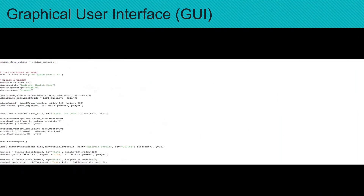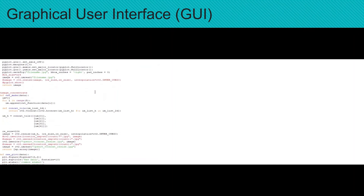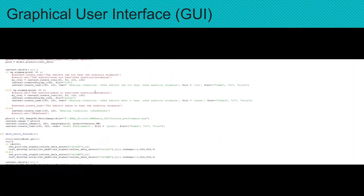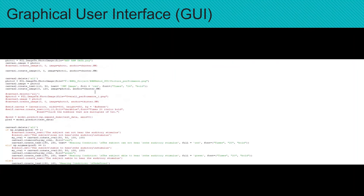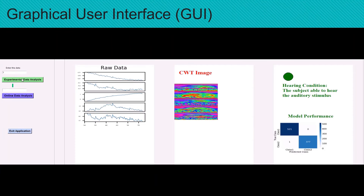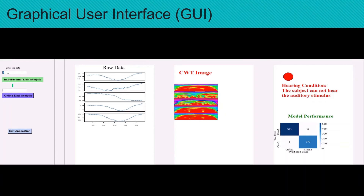In this study, we have also designed a graphical user interface. To demonstrate the model performance, we shuffle the testing dataset such that if we input an odd number, it calls the labeled data when the subject is able to hear the auditory stimulus, and if we input an even number, it calls the labeled data when the subject cannot hear the auditory stimulus.